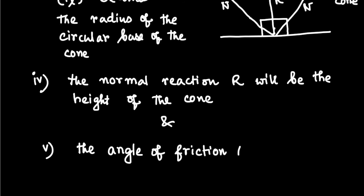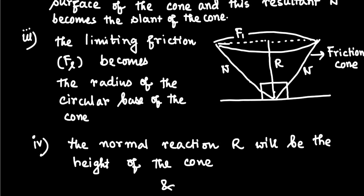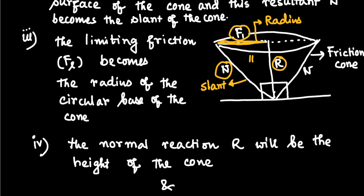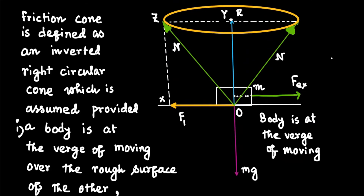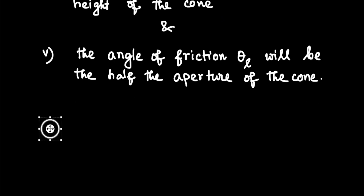The angle of friction theta-L will be half the aperture of the cone. The angle subtended by the resultant N with the normal reaction R is theta-L. Since the total aperture is 2·theta-L, the angle of friction is half the aperture of the friction cone. This angle is theta-L on each side.